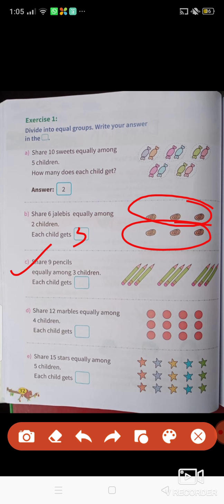So now share 9 pencils among 3 children. Each child gets, you can see 1, 2, 3, 4, 5, 6, 7, 8, 9. So 3 children will share 9 pencils equally. 1 child will be given 3 pencils. 3 3's are 9. So 1 will get 3.